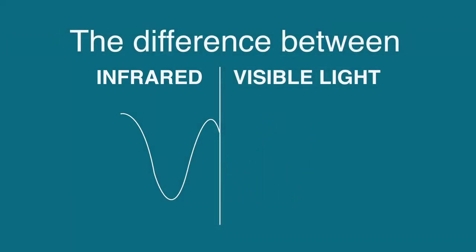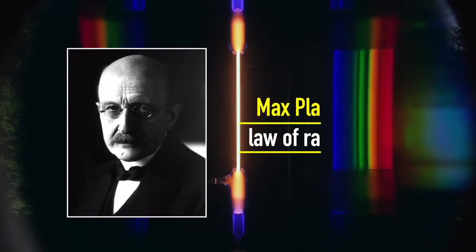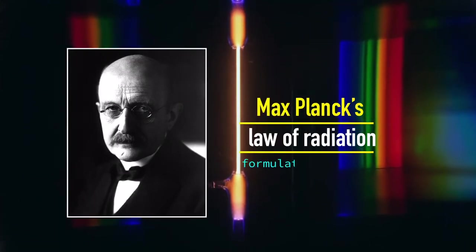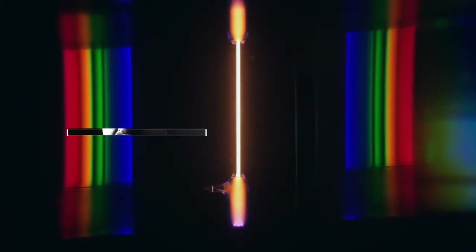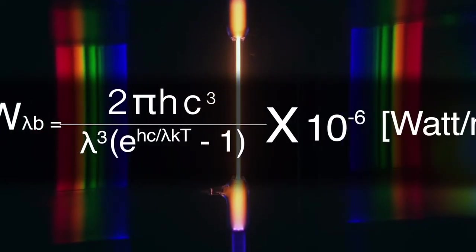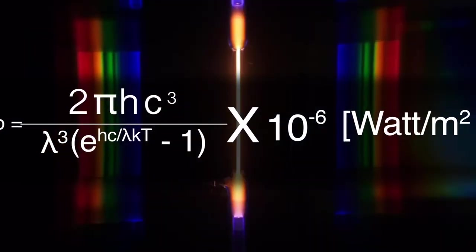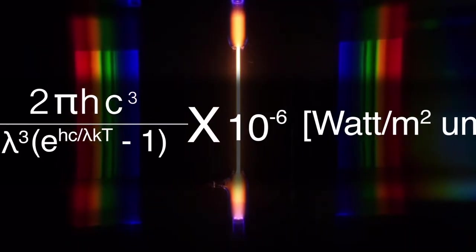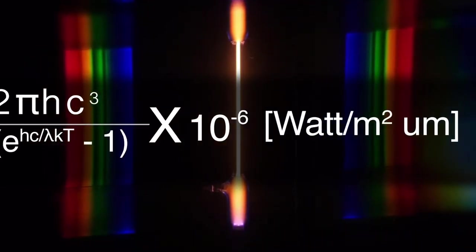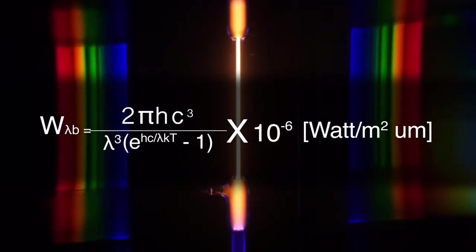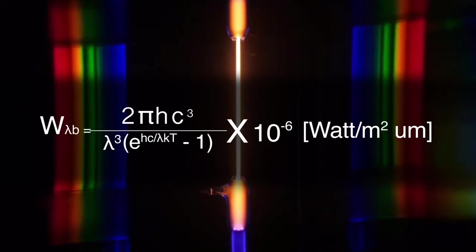We can demonstrate this in another way too, using Max Planck's Law of Radiation, formulated in 1900. It's an equation which produces a curve, which illustrated that the warmer a body is, the greater its emission at each wavelength, and the shorter the wavelength at which emissions peak. It seems complicated, but it isn't.